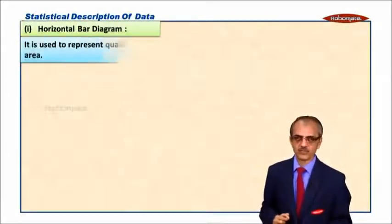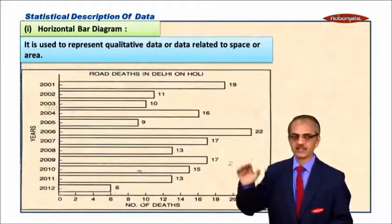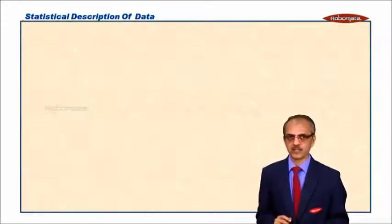For which type of data is it used? It is used for qualitative data or data related to space or area. This is an example of a horizontal bar diagram.